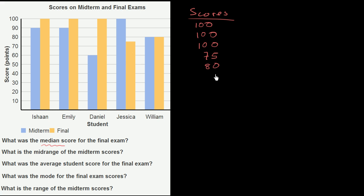If we sort these in increasing order, the lowest score was 75, then 80, and then three 100s: 100, 100, and 100.